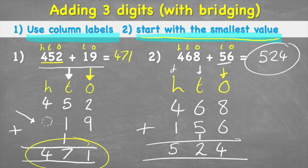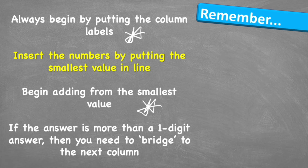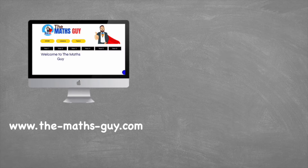Adding up the hundreds: four plus one gives me five. So the answer to 468 plus 56 is 524. That can get confusing — I really suggest watching that part again. To remember: always begin by putting column labels, insert numbers with the smallest value in line first, begin adding from the smallest value, and if the answer is more than one digit, bridge to the next column by partitioning those numbers into the correct columns.